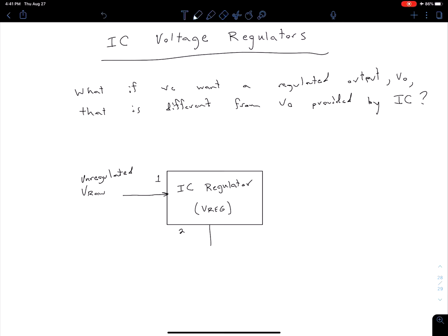Then we have pin 3, our regulated output. If we connect input to Vraw, pin 2 to ground, and Vout to our load, we would have whatever Vreg is specified for the IC. So how do we change that to be a different value?